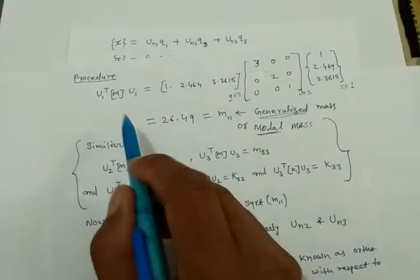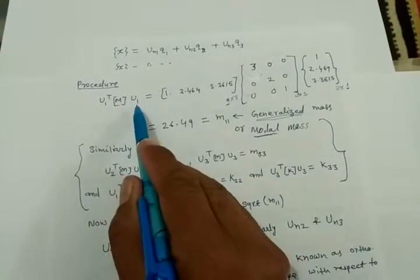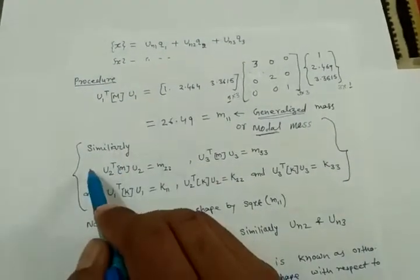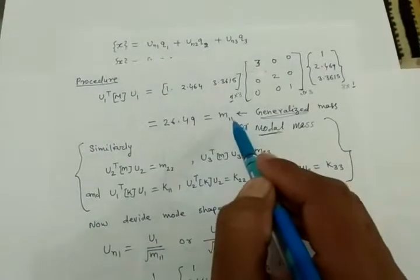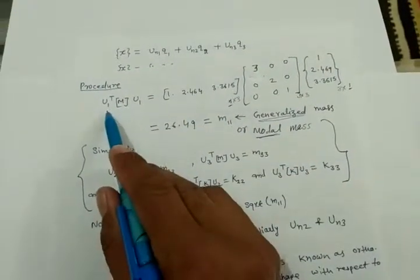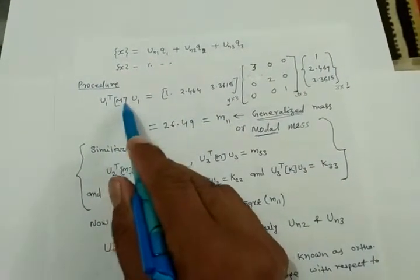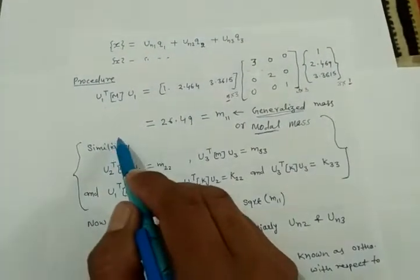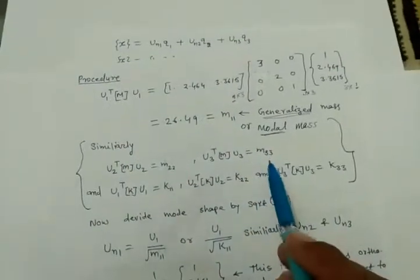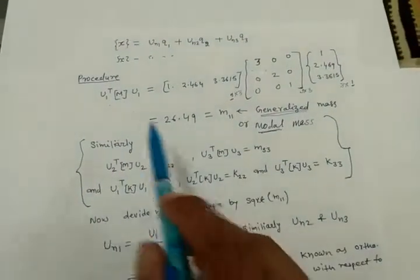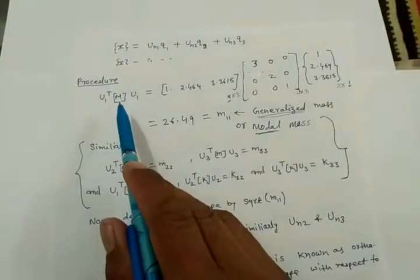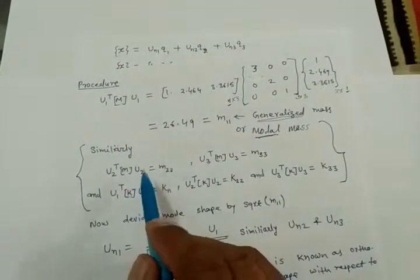We can similarly calculate M22 by taking u2 transpose times M times u2, and M33 likewise. If instead of the mass matrix we use the stiffness matrix, we obtain K11 (the generalized stiffness).